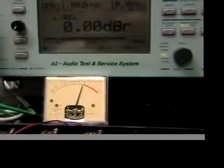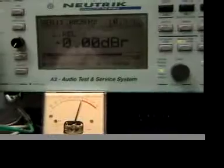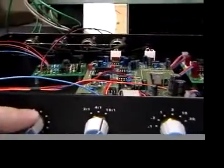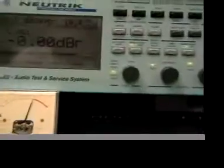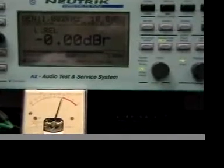Here on the VU meter, we've got the gain reduction indication as displayed from the Expat Audio VU driver card. So now, if I bring the threshold down until we start to see the onset of gain reduction, we can see that at 0 dB on the VU meter, we have 0 dB output level.